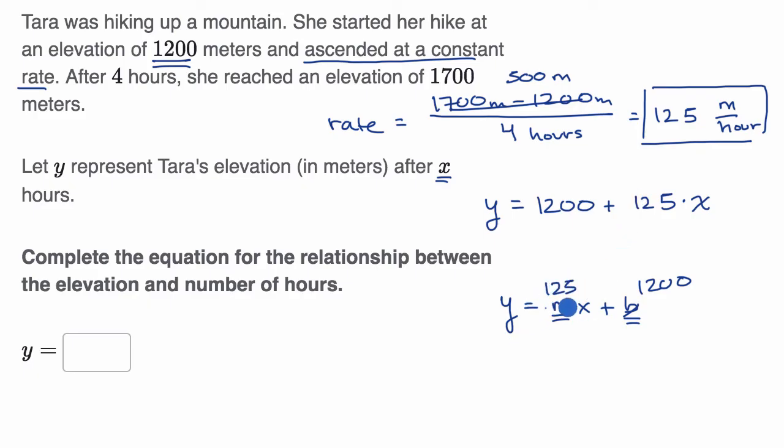So notice, these are equivalent. I just have these two terms swapped. So we could either write y is equal to 1,200 plus 125x, or you could write it the other way around. You could write 125x plus 1,200. They are equivalent.